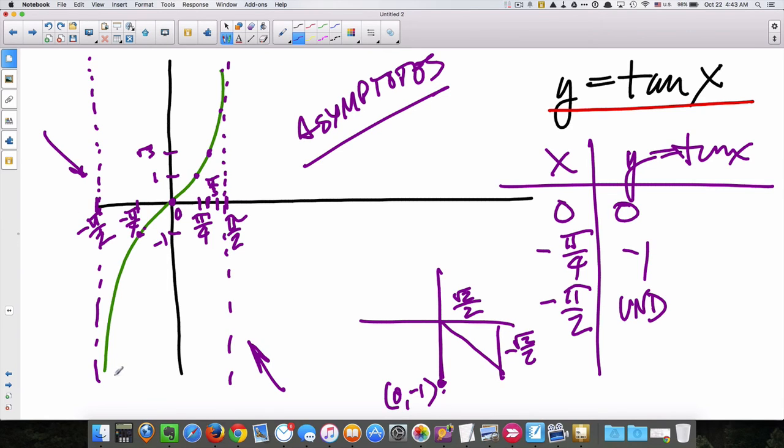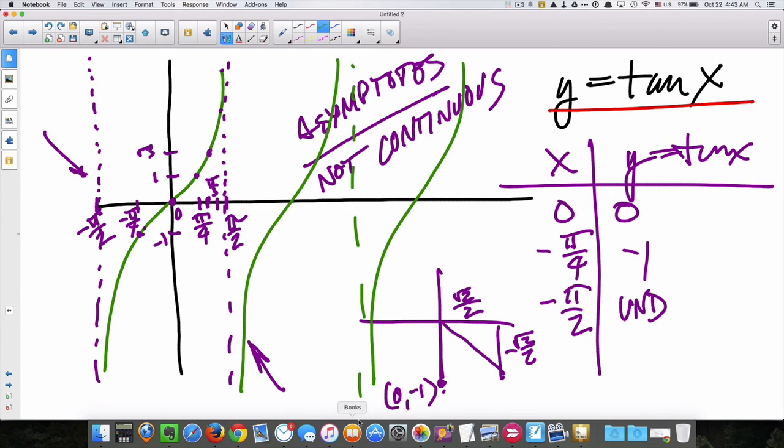So, one thing that's different about tangent, that's not the same as sine and cosine, is the function is not continuous. That means that I have to pick up the pen to keep writing the function. So, I have to do this, and I have to do that, and I have to do that. But, these asymptotes continue to repeat.